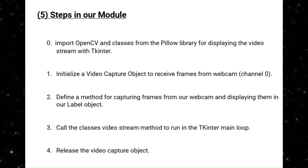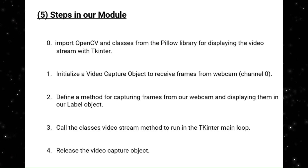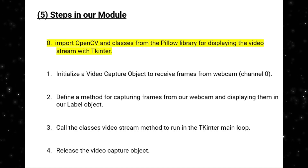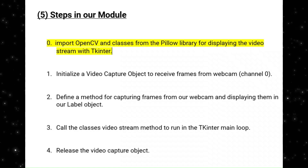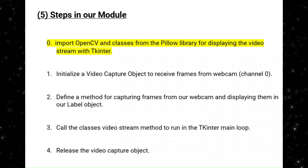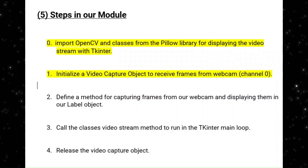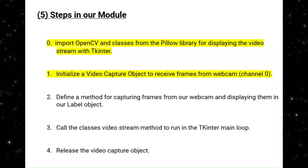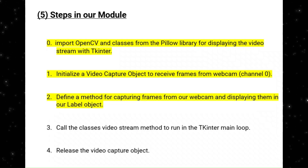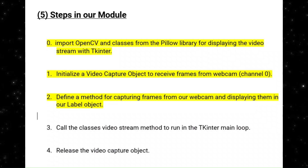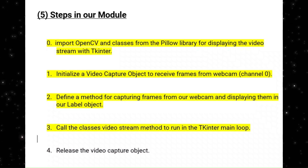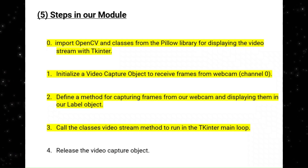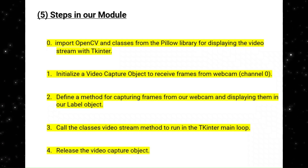We're going to break our task of adding the video stream into five steps as pertains to our previous module. These steps include: first, importing OpenCV and classes from the Pillow library for displaying the video stream with TKinter. Then we'll initialize a video capture object to receive frames from our webcam by specifying channel zero. Then we'll define a method for capturing frames and displaying them in our label object. After this, we'll call the class's video stream method to run in the TKinter main loop, and finally we'll release our video capture object.